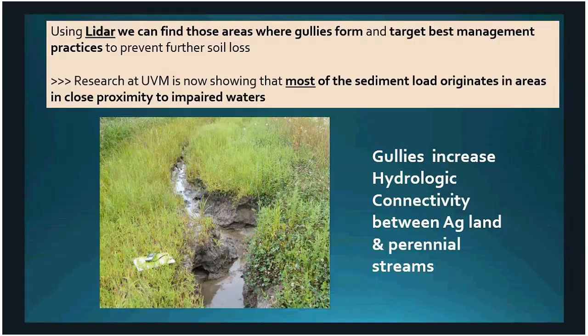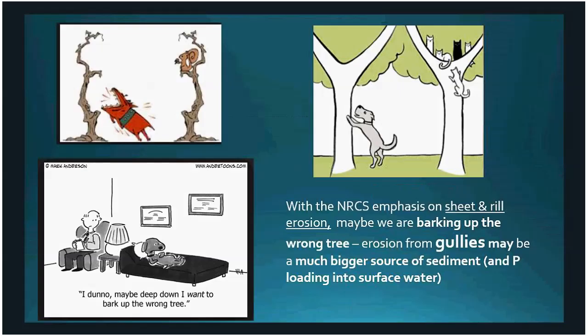At NRCS I do compliance checks on farms, making sure farmers are following the right crop rotation, using the universal soil loss equation and tolerable soil loss standards. We're mainly concerned with sheet and rill erosion. While farmers do have gullies in their fields and we have practices to help repair them, we aren't really monitoring for that — which is why using LiDAR is so valuable.